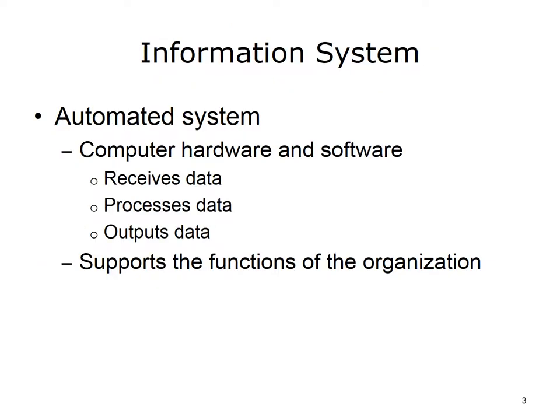Let's begin with a definition of an information system. The American Health Information Management Association, AHIMA, defines an information system as an automated system that uses computer hardware and software to record, manipulate, store, recover, and disseminate data — that is, a system that receives and processes input and provides output.